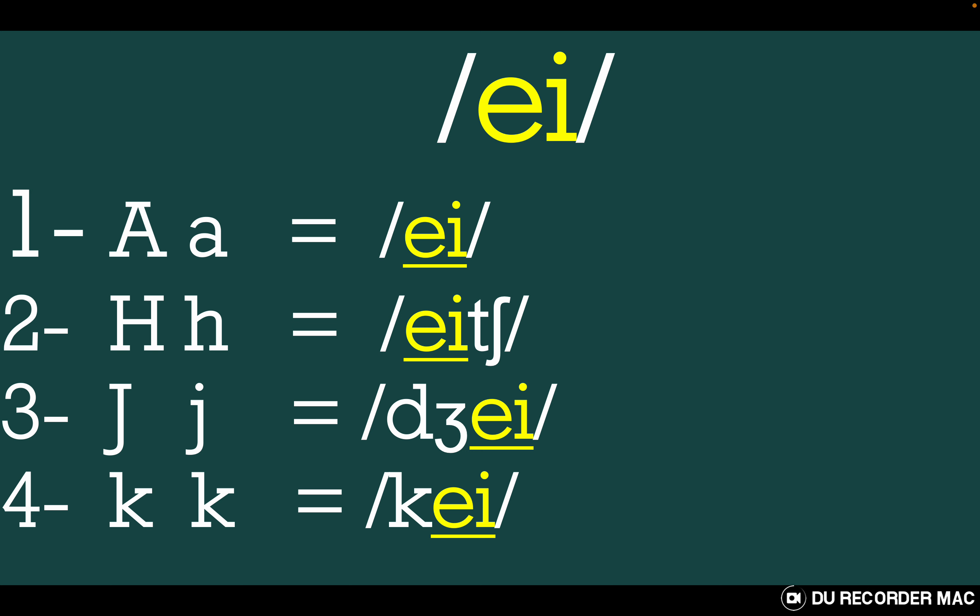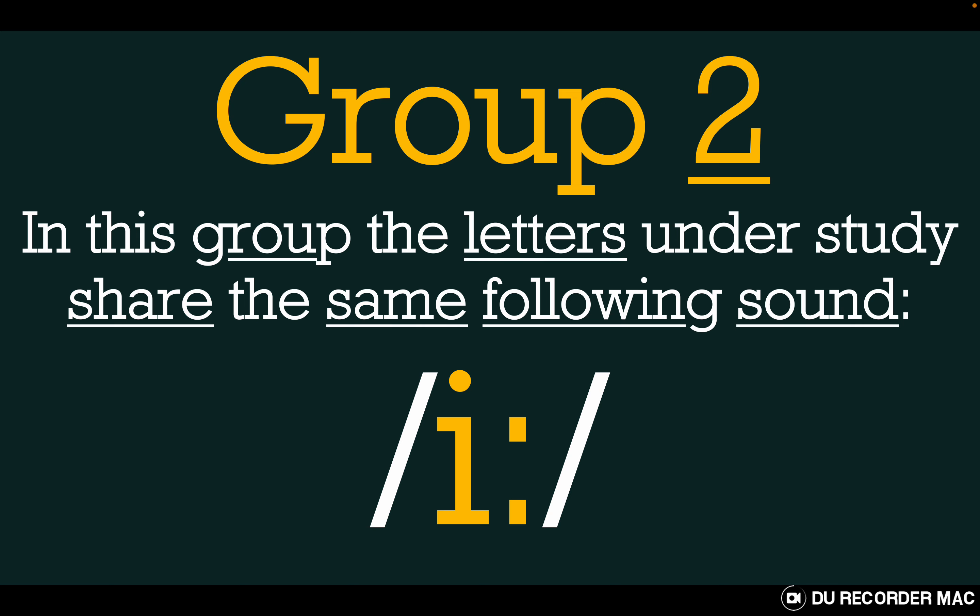Let's now repeat the four sounds: A, H, J, K. Repeat after me: A, H, J, K. So this is the first group — all four letters are pronounced with the 'a' sound. Let's go to the second group.